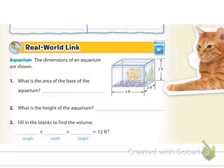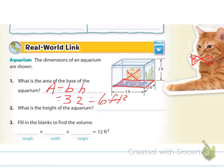The real world link says the dimensions of an aquarium are shown. So it looks like the kitty wants to eat the fishy. The area of the base of the aquarium would be this section down here. So we would use the area formula for big B, where we do base times height. And that would be 3 times 2, which is 6 feet squared. Then the height would be 2 feet. And so if I filled in for my length, my width, and my height, I'd end up with 6 times 2, which is my area, times the height. So it would be 12 feet cubed.